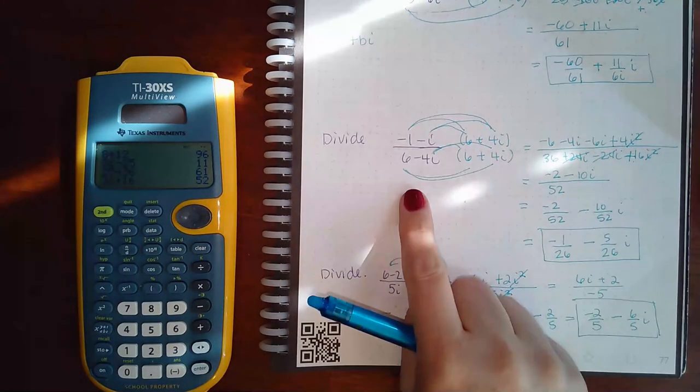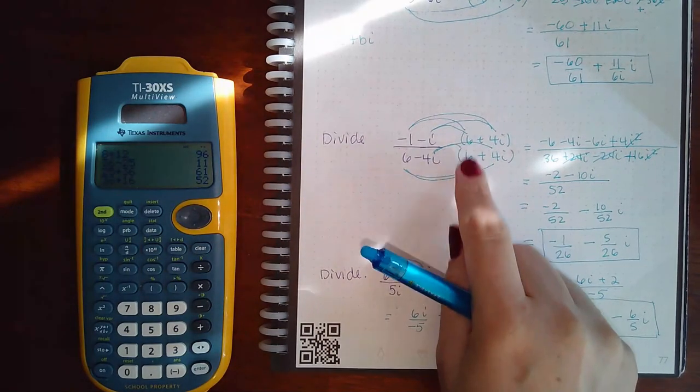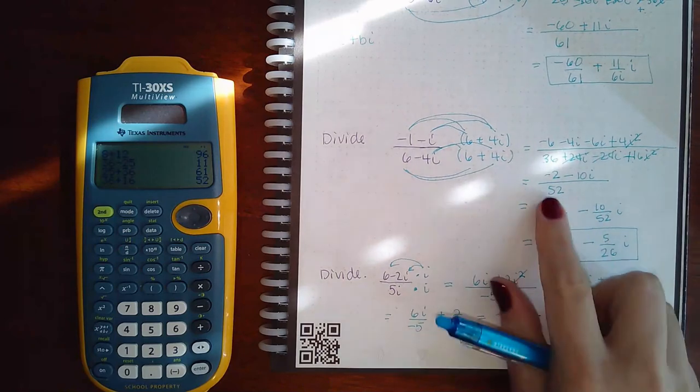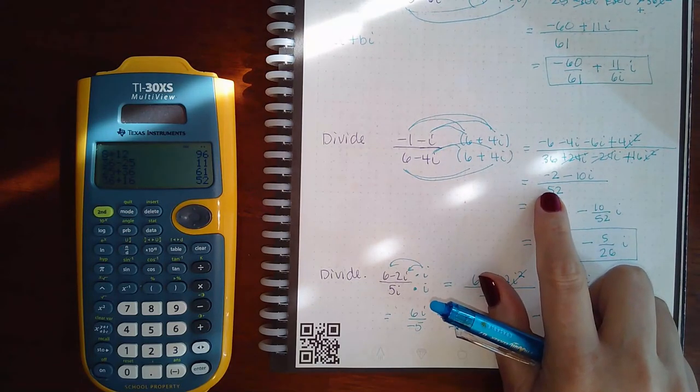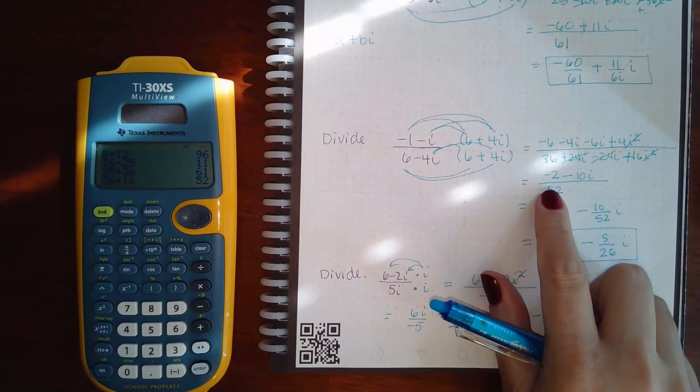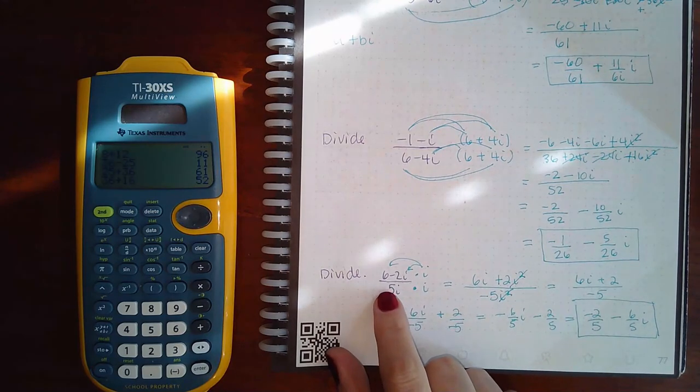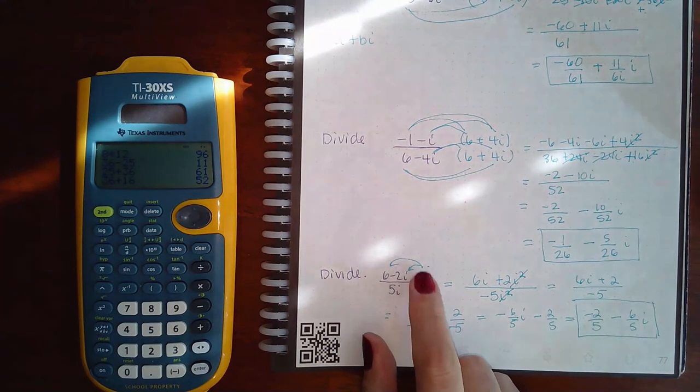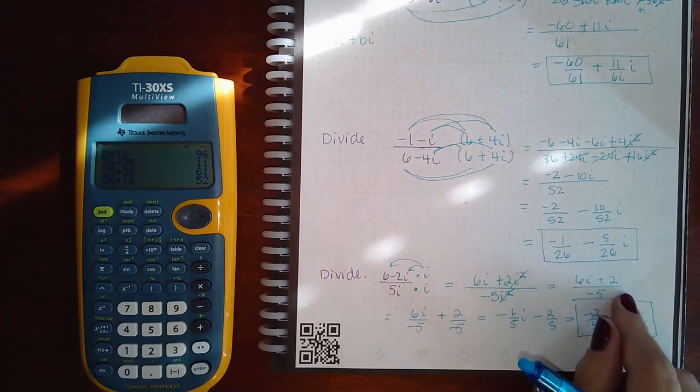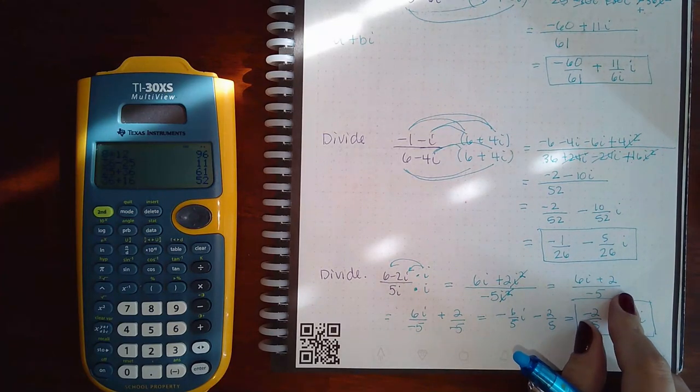So if it's a binomial in the denominator, use the conjugate and everything will work out so that you no longer have a square root or an i in the denominator. If it's a monomial, all you need to do is multiply by an extra i, and it'll make the denominator or the radical or the i go away.